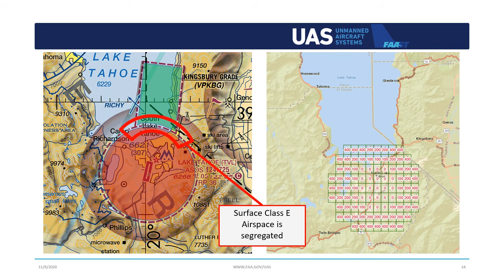To illustrate how the two airspace depictions match up, I placed the aeronautical chart for Lake Tahoe airport next to the UAS facility map for the same area. This example clearly shows that the Echo 2 area, indicated by the red shading, has a corresponding grid map associated with it and requires airspace authorization. The green-shaded areas are Echo 4 extensions. We know it's Echo 4 airspace because it's segregated from Echo 2 airspace, and Echo 4 airspace does not require an airspace authorization and therefore does not have a corresponding grid map.